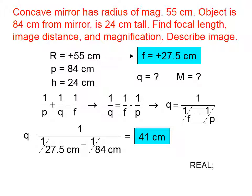Obviously, this is a real image because q is positive. And we know that inverted images are always real images. Therefore, this object must be inverted.